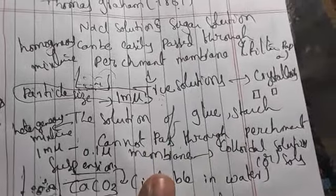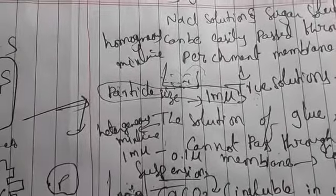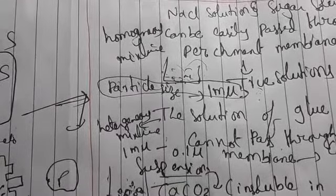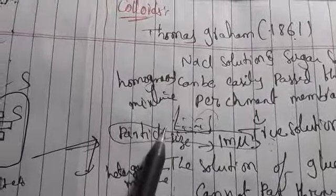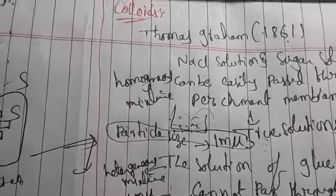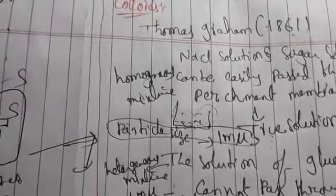So these are the differences between true solutions, colloidal solutions, and suspension solutions. True solutions are very transparent. Colloidal solutions are almost transparent. Suspension solutions are opaque. True solutions cannot show the Tyndall effect, but colloidal solutions and suspension solutions both can show the Tyndall effect.